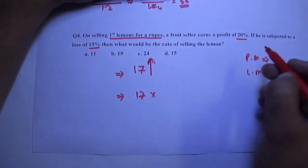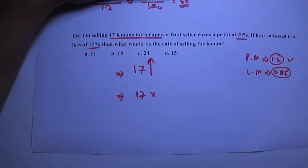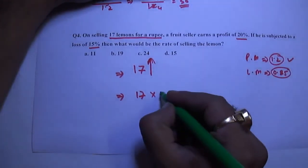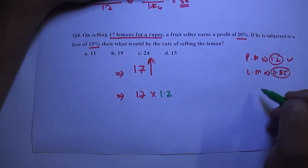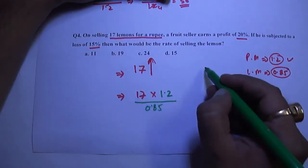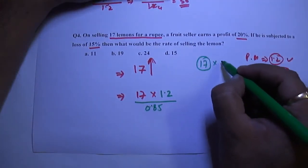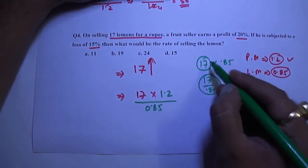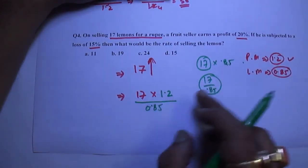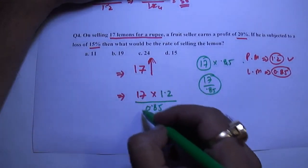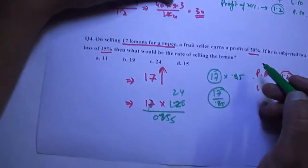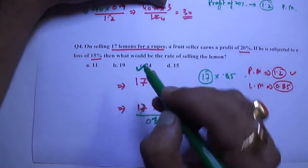How to increase? We have two values, 1.2 and 0.85. First consider this. We want to increase 17. Should we multiply it by 1.2 or divide? We will multiply it. So write 1.2. And we have to increase the value of 17, so should we multiply by 0.85 or divide by it? The answer is by dividing it. If we multiply any number by 0.85, the value of 17 will decrease. But if we divide 17 by 0.85, the value will increase. We want to increase, so if we divide by 0.85, the value will increase. Our main aim is to increase the value. Now 24. So to get a loss of 15%, we should sell 24 lemons for a rupee.